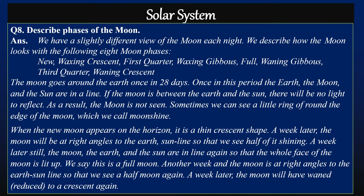Question eight: Describe the phases of the moon. Answer: We have a slightly different view of the moon each night. We describe how the moon looks with the following eight moon phases: new, waxing crescent, first quarter, waxing gibbous, full, waning gibbous, third quarter, and waning crescent. The moon goes around the earth once in 28 days.